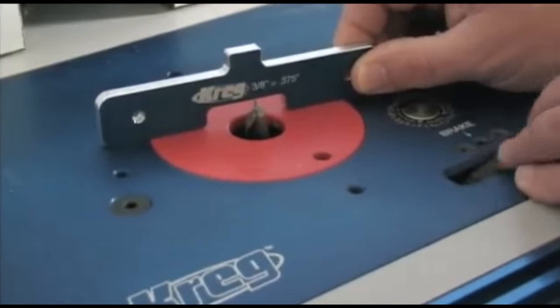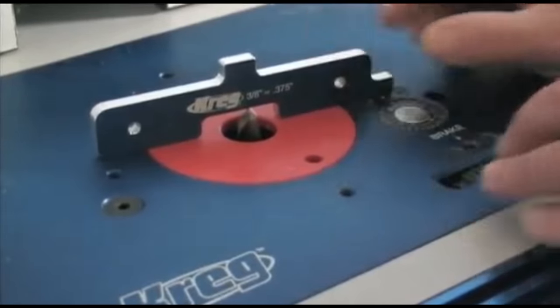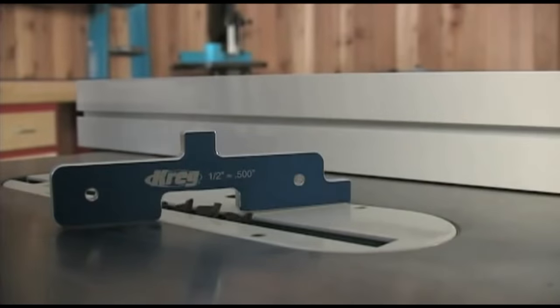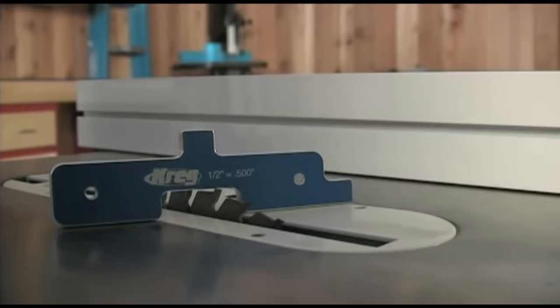The setup bar straddles the router blade or table saw blade, making it easy to see when you reach the desired height. Raise the bit or blade until it reaches the gauge and you're good to go.